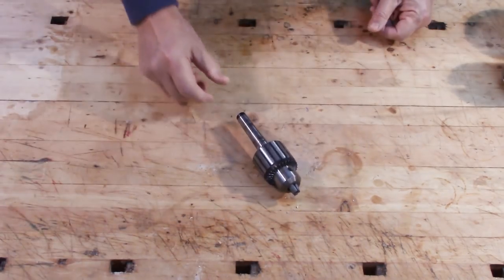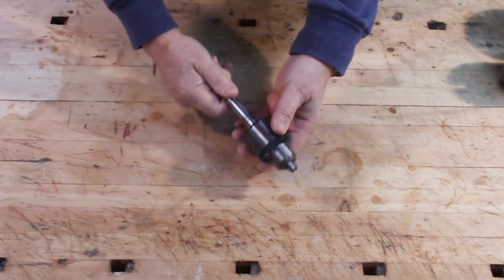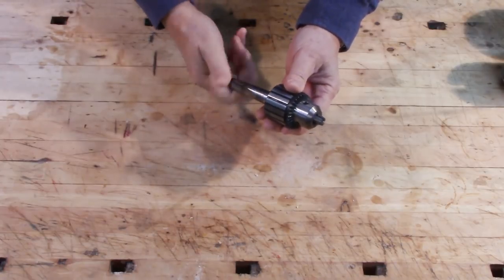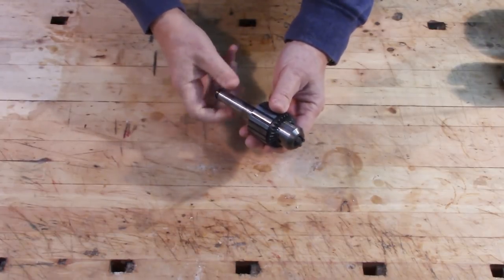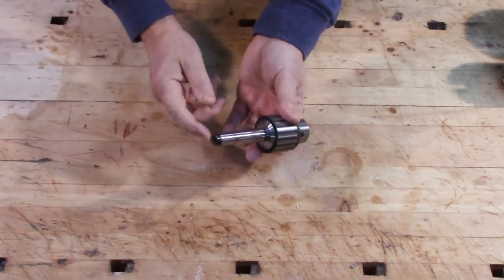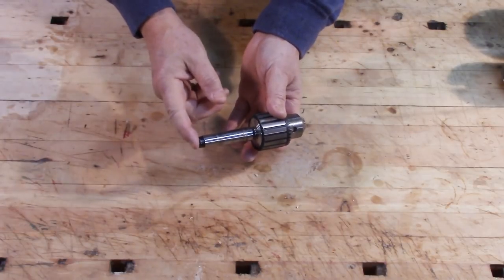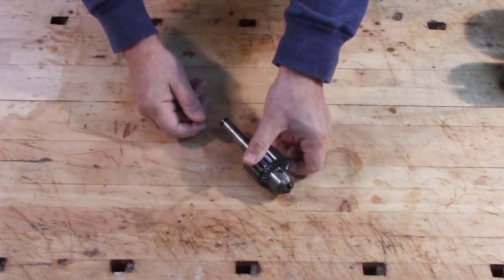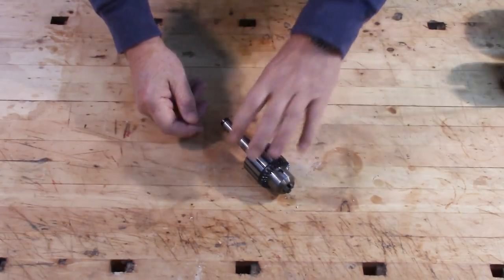This is a lathe chuck as well. This is called a Jacobs chuck. And it's also called a Jacobs chuck when it's on a drill or a drill press or anything else. This has got a Morse 2 taper on it to fit my tail stock. Very convenient, but it's not for holding work on the headstock.